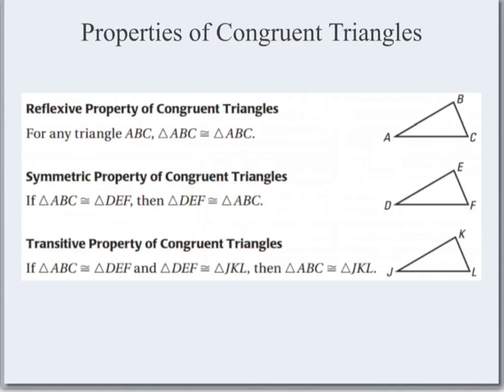The transitive property says if triangle ABC is congruent to triangle DEF, and triangle JKL is also congruent to triangle DEF, then triangle ABC must be congruent to triangle JKL. This should make the same sense as before, because those properties are the same — instead of talking about segments or angles or algebraic expressions, we're just talking about triangles being congruent.